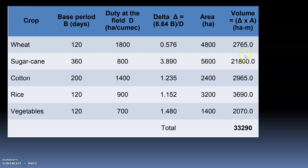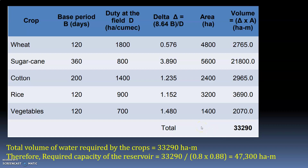Calculate the total volume by adding all crop volumes: 2,765 + 21,800 + 2,965 + 3,690 + 2,070 = 33,290. This total volume of 33,290 hectare-meters is the water required by the crops.